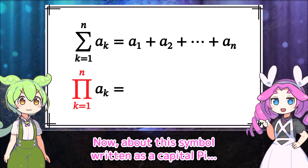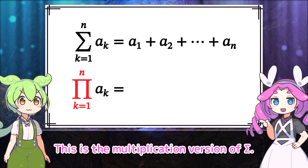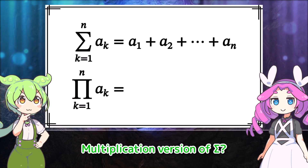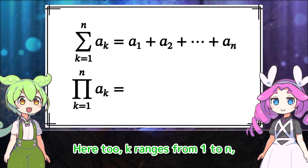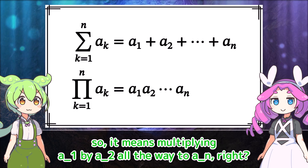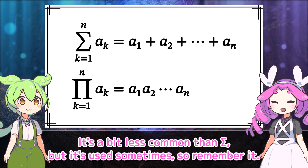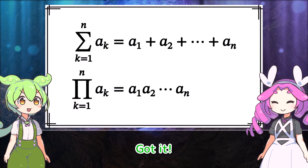Now, about this symbol written as a capital pi. This is the multiplication version of sigma. Which means, here too, k ranges from 1 to n. So it means multiplying a_1 by a_2 all the way to a_n, right? Exactly. It's a bit less common than sigma, but it's used sometimes, so remember it.